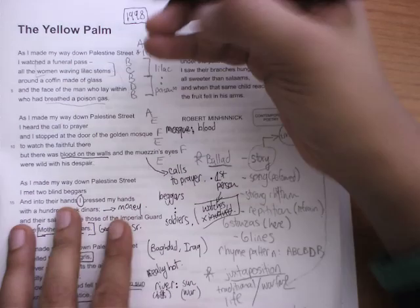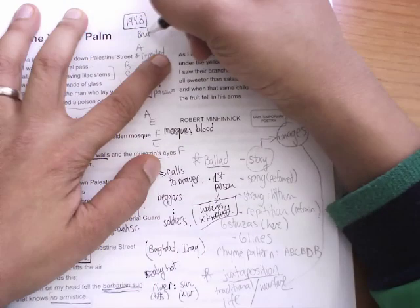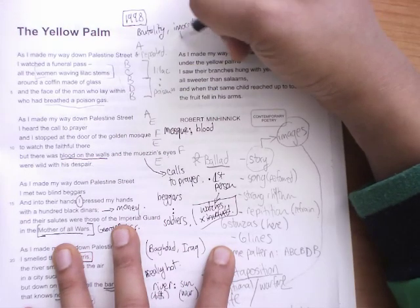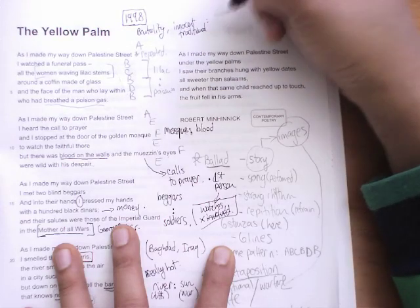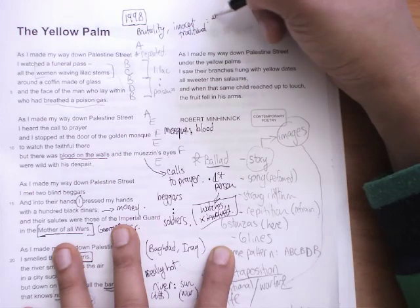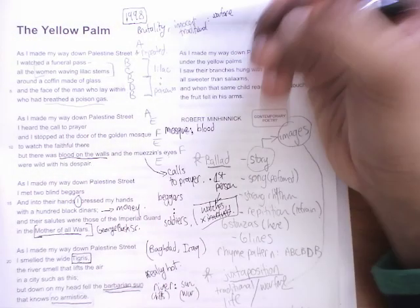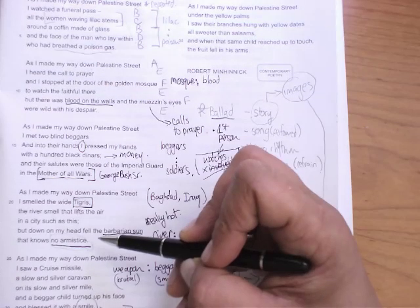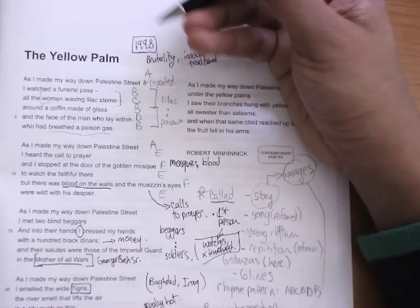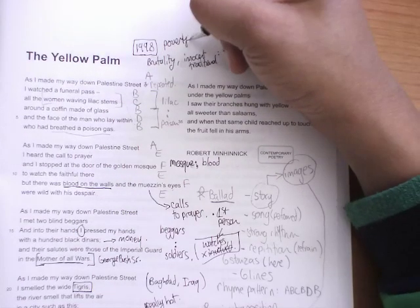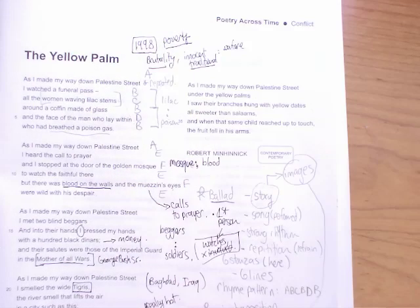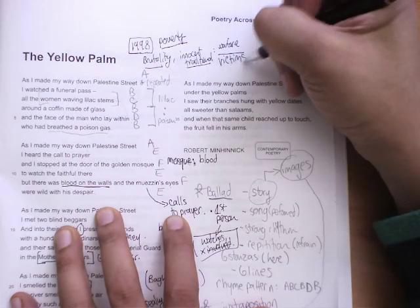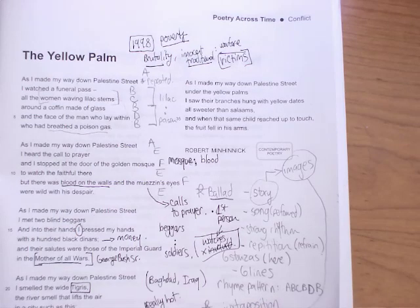98 was a long time after the mother of all wars, but there were still sanctions on the country of Iraq and the US and the UK would periodically bomb the country as well. And the poet here, Robert Minnehik, it was his experience of being in Baghdad and witnessing the poverty and the devastation. And we can also say maybe the brutality, the mixture of innocent traditional images and signs of modern warfare, out-of-work soldiers, bloodied mosques, people dying of poison gas, no peace even from the sun, and cruise missiles still floating around. Also, we have poverty. There's beggars all over this poem. And there's a sense that things aren't what they used to be. That things, there's something really wrong. And we are watching the victims. We're getting a ballad, a song almost, that lists the images of the victims of this war.